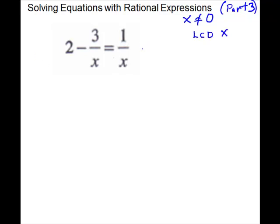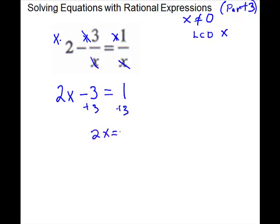We have to multiply all the way across by the x — every term times x. So x times 2, x times 3 over x, and x times 1. Nothing cancels on the first one, so we have 2x. When we simplify the next one, the x cancels, giving us minus 3. The x also cancels on the third piece, leaving 1. We have a nice linear equation: add 3 to both sides, we get 2x equals 4. Divide by 2, gives you x equals 2. We only threw away 0, so 2 is our solution.